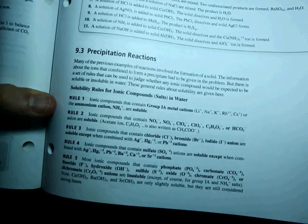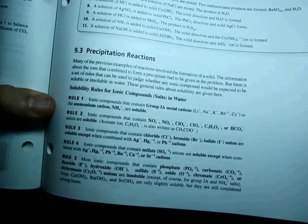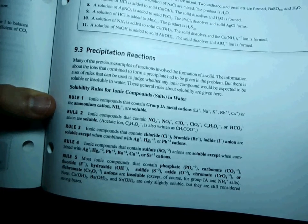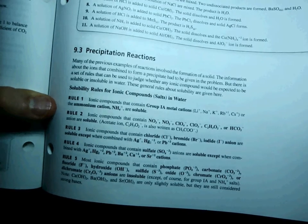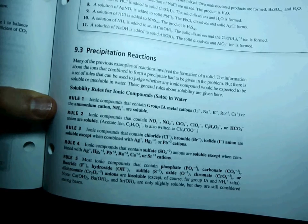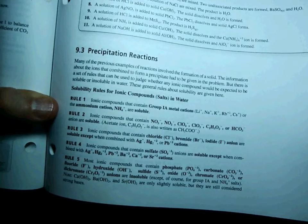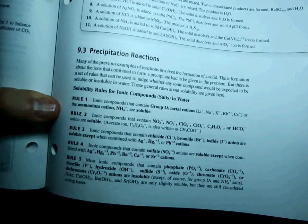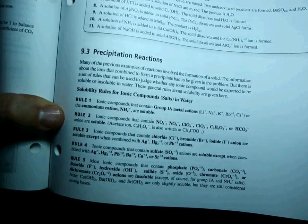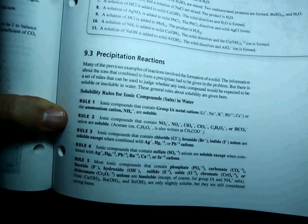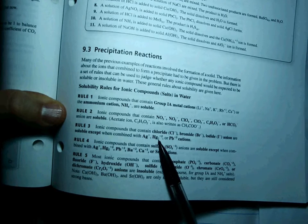Real quick, rule 1 says that group 1A metal cations or the ammonium cation are soluble, so anything that contains those is going to split up and dissolve into those individual ions in water. Rule 2 says that any of those minus 1 charges, anions, nitrate, nitrite, perchlorate, chlorate, acetate, or hydrogen carbonate, anything containing those are soluble. Rule 3 says that chloride, bromide, and iodide almost always make soluble compounds, except when they combine with silver plus 1, Hg2 plus 2, or Pb plus 2.